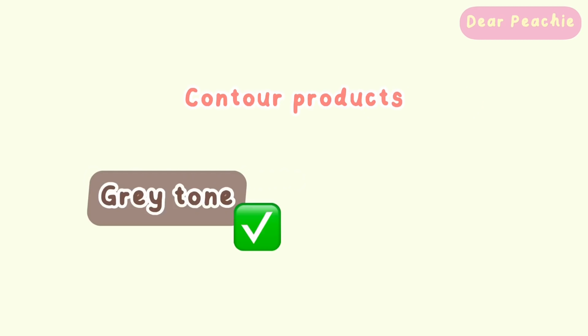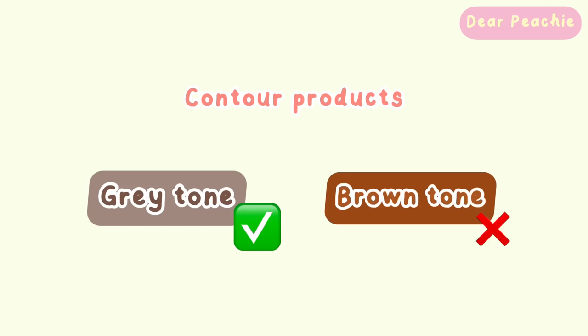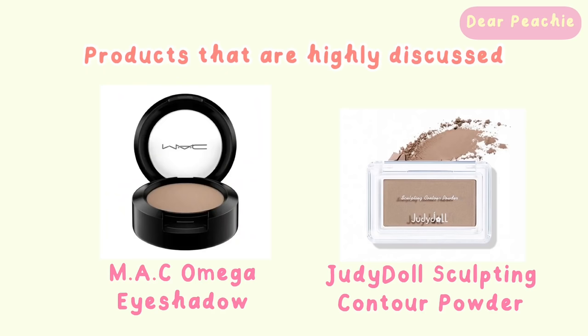When picking a contouring product, please remember to pick products with a gray undertone rather than a brown undertone. This is because a gray undertone contour will suit Asians or yellow skin tones more, as it will look more natural on skin — the shadow cast on our faces is actually gray in color rather than brown. Choosing a brown tone will make your makeup look messy and unnatural.